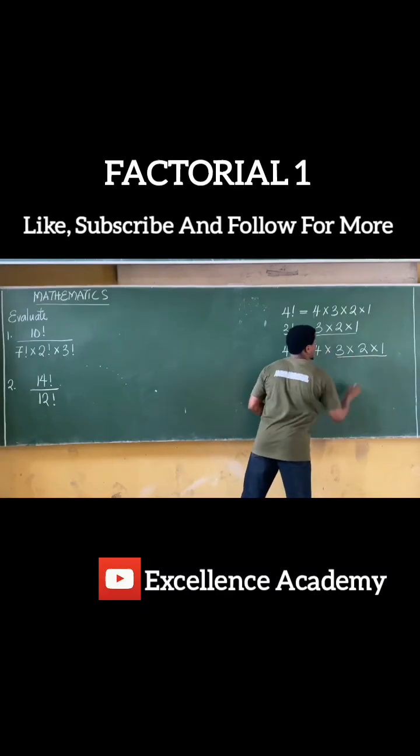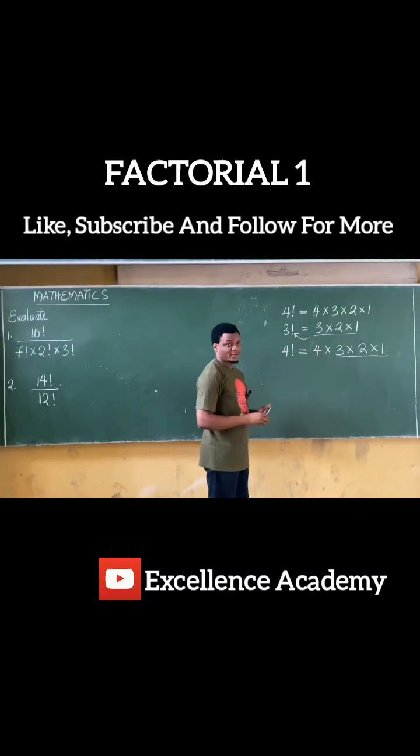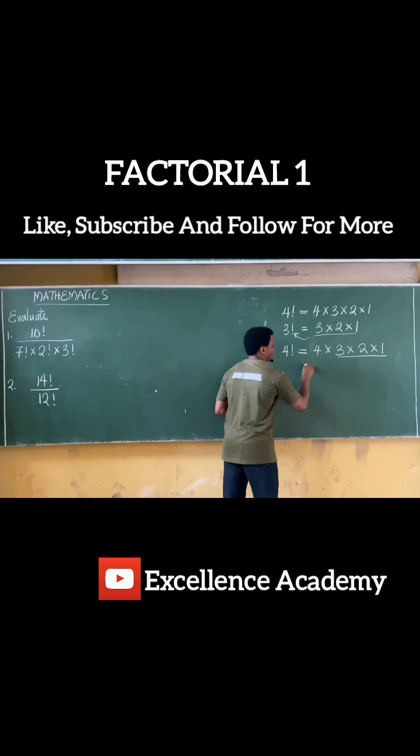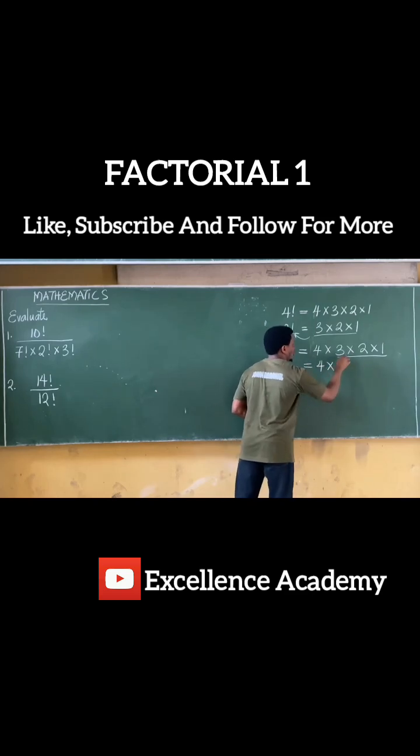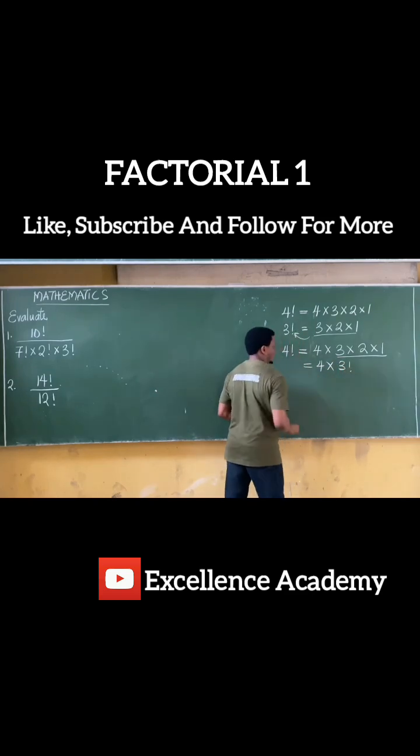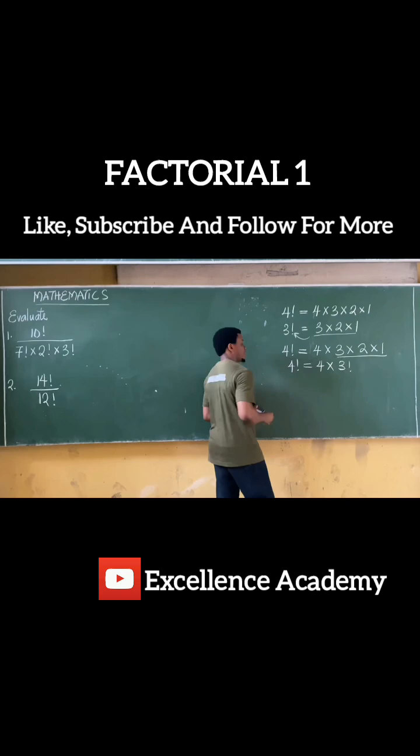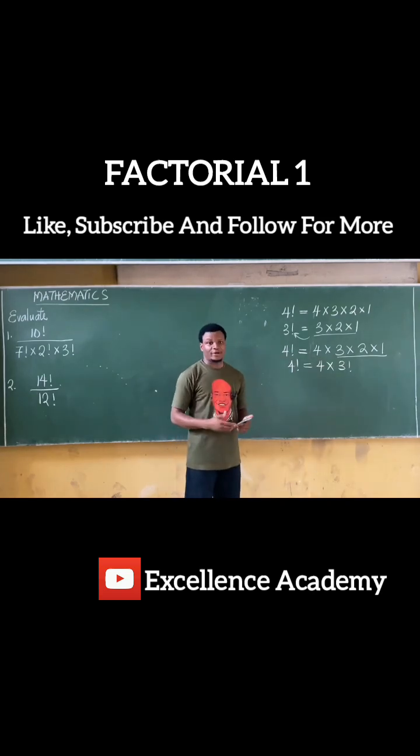In essence, all of this is simply 3 factorial. That means 4 factorial is equal to 4 times all of this, which gives you 3 factorial. So 4 factorial is 4 times 3 factorial.